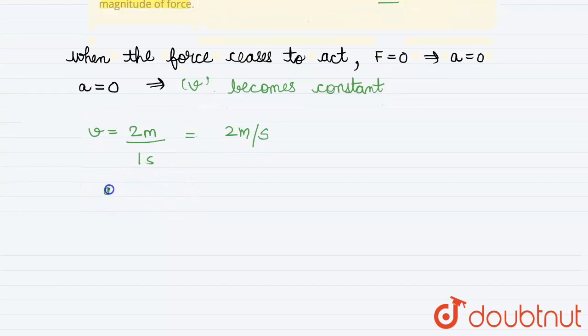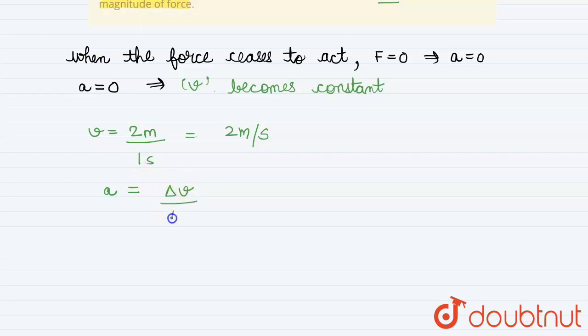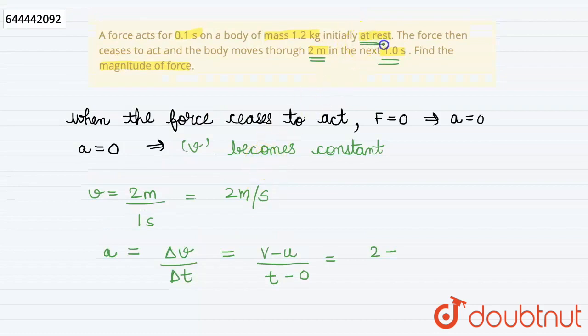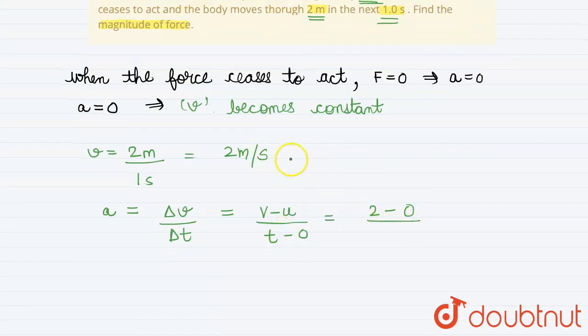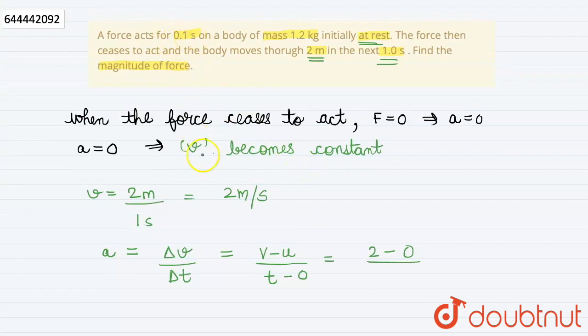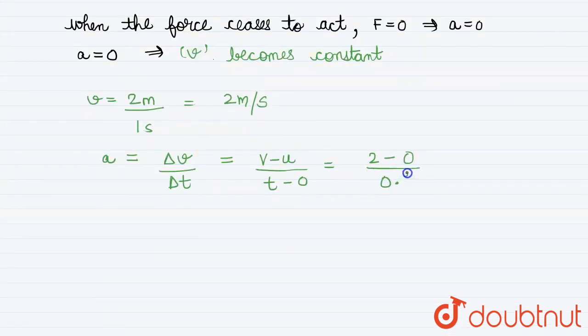Now to find acceleration, we know that acceleration equals change in velocity upon change in time. Now change in velocity will be final velocity minus initial velocity upon t minus zero. Initial velocity will be zero because it was initially at rest. So 2 minus 0 upon t is given as 0.1 seconds. So our acceleration comes out to be 20 meter per second square.